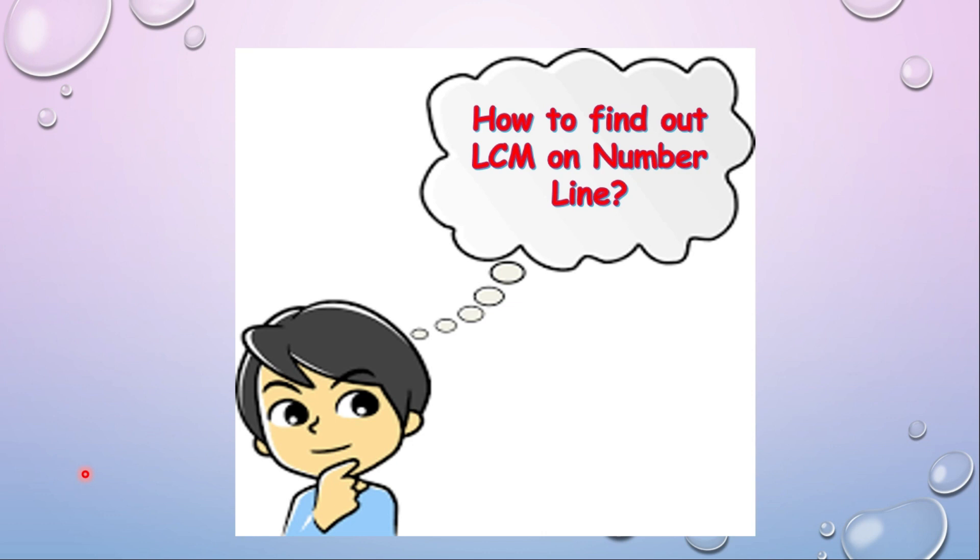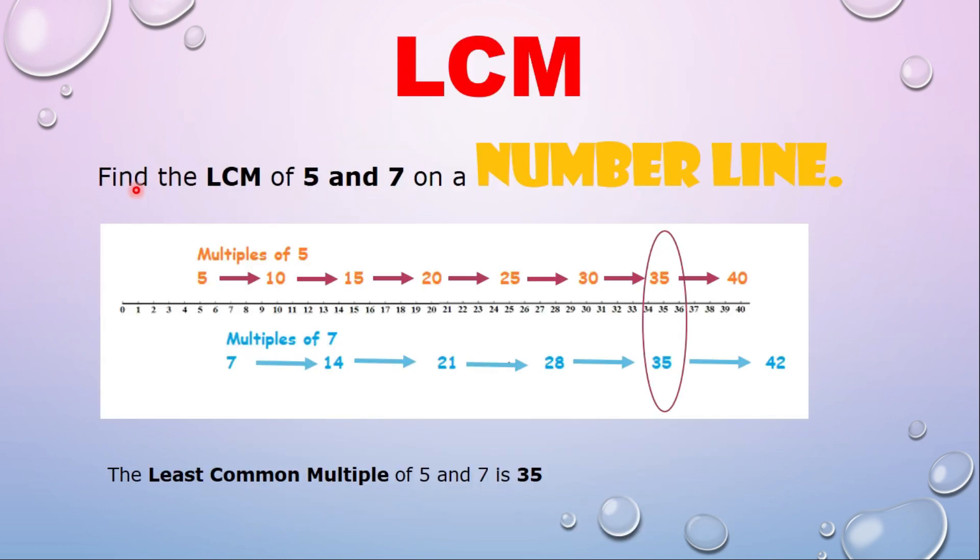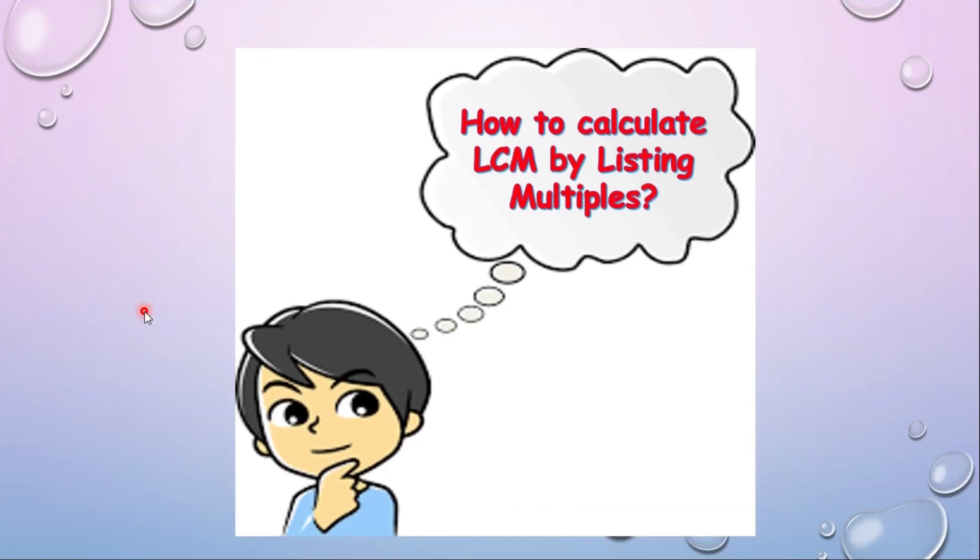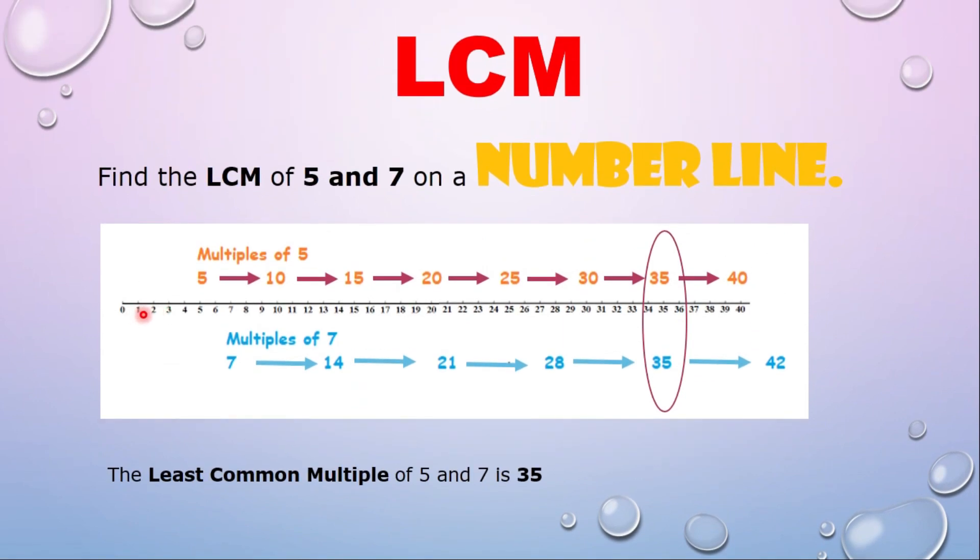There are two methods we are going to discuss in this video. The first method is finding LCM on number lines. In this method, you draw a number line where numbers are written at the same interval of distance. To find the LCM of 5 and 7 on the number line, we mark all the multiples of 5: 5, 10, 15, 20, 25, 30, 35, 40.